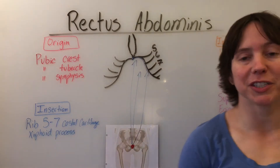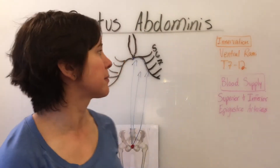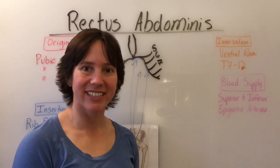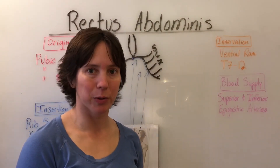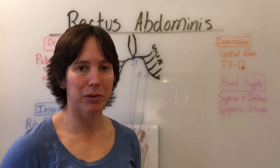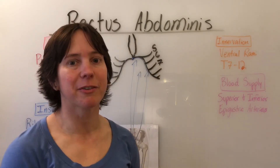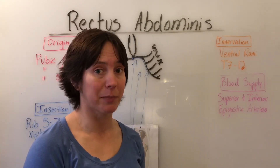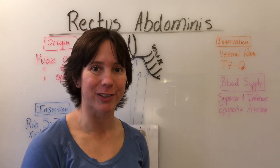The innervation of the rectus abdominis is ventral rami T7 through 12. The blood supply are the superior and inferior epigastric arteries.